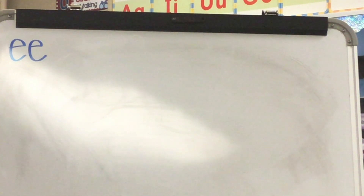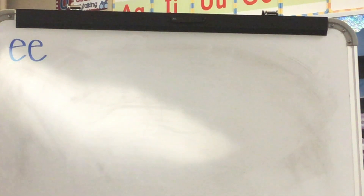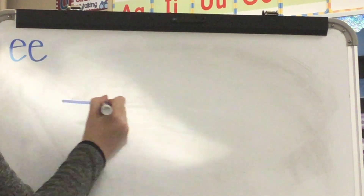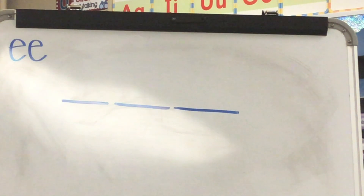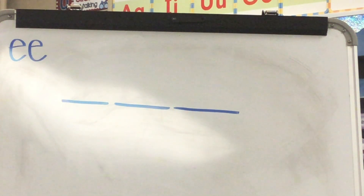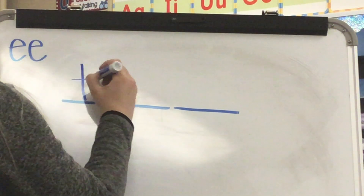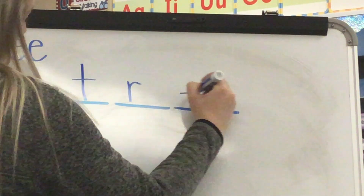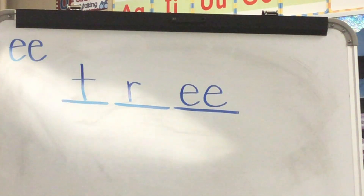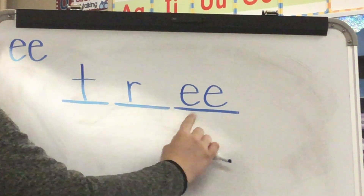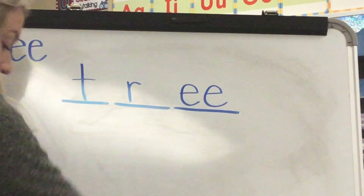Our next word also has the EE sound spelling. Our word is tree. What word? Tree. Stretch tree: T-R-E. Write the sound spellings you hear in tree. Check. Spell tree: T-R-E-E. Word? Tree. Yes, tree.